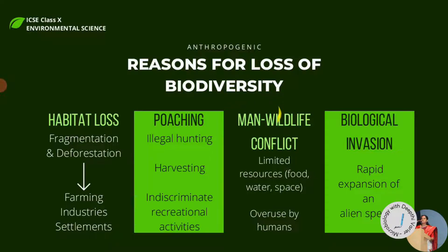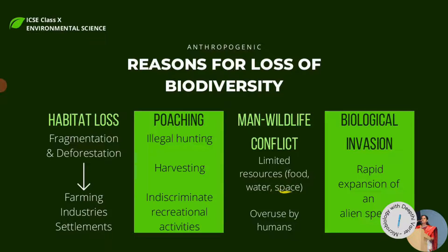The third reason is conflict between man and wildlife. Man uses up all available resources, leaving animals and plants short of food and space. So animals start attacking farms, agricultural lands, and human settlements simply because they are looking for food. This is called man-wildlife conflict and it is very common across the world. The main reason is that human beings have encroached into the wildlife habitat.